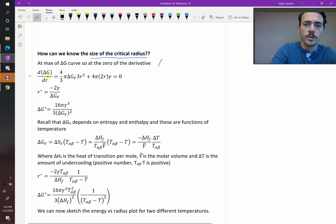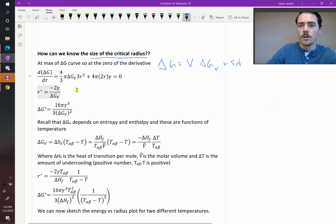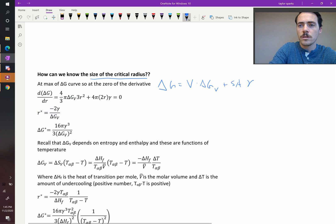So our initial expression for delta G was equal to the volume of the sphere times the change in the Gibbs free energy on a volumetric basis plus the surface area of a sphere multiplied by our surface free energy. The surface energy associated with that.